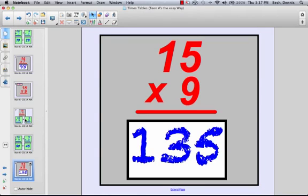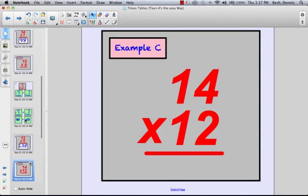And together they put together to make 135. But then you might say, well what happens if both numbers are teens, like my last example here?